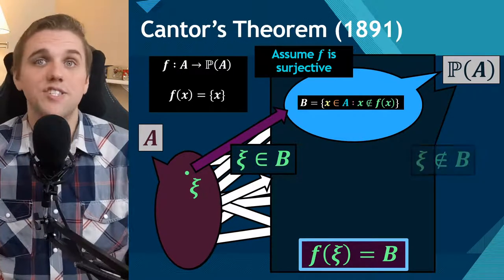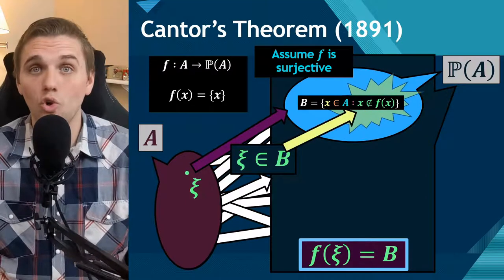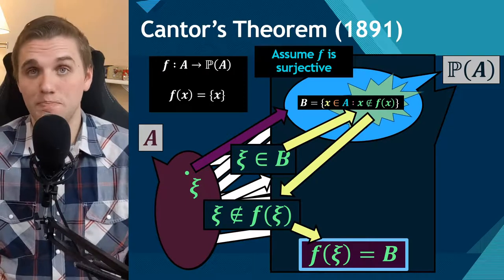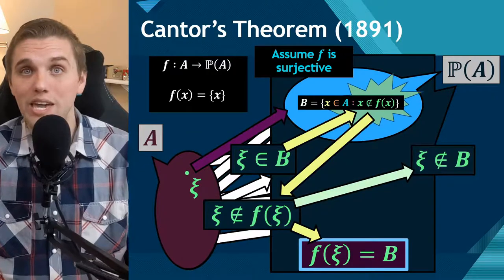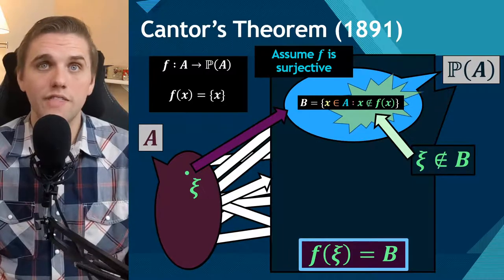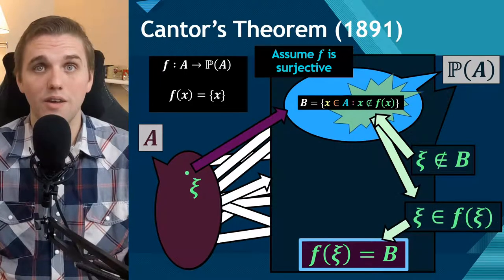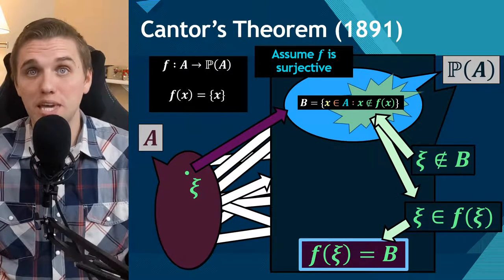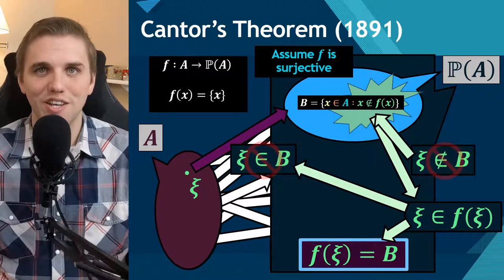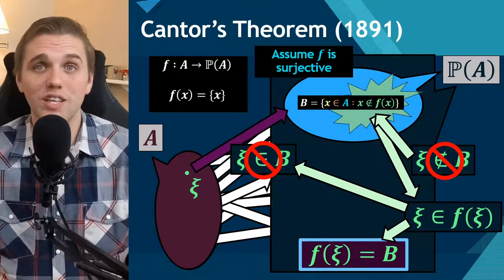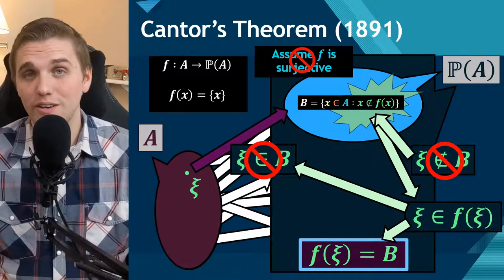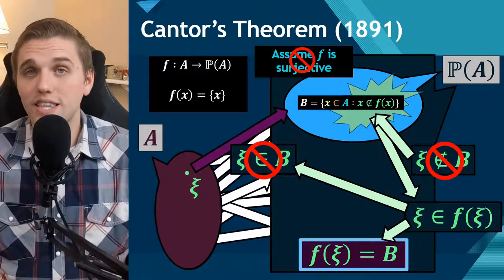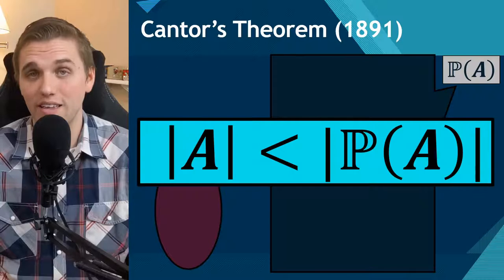Now either Z is in B or it's not. If Z is in B, then Z satisfies the rule of B, which means that Z is not in the output of Z. Since the output of Z is just B, this means Z is not in B — a contradiction. Similarly, if Z is not in B, then Z does not satisfy the rule of B, which means Z is in F(Z). Since the output of Z is B, this means Z is in B — also a contradiction. No matter which way we go, we run into a contradiction, so the assumption that F is surjective must be false. This means there are more outputs than inputs always — the size of any set is always going to be less than the size of its power set, and that's a strict inequality.